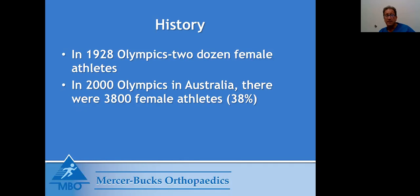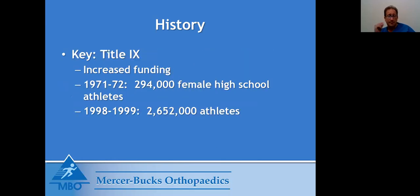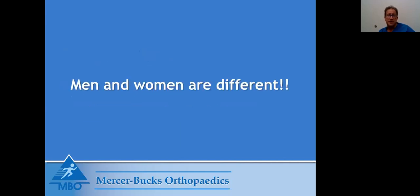We're going to concentrate mostly on back and leg pain, but there are lots of problems — upper extremity, lower extremity, and a bunch of different other issues, including the female triad. Just a little history: in 1928, only two dozen female athletes were in the Olympics. As of 2000, that went up to 3,800, or 38% of all athletes. A lot of this was fueled by Title IX, passed in the 70s, which opened up equal athletics for high school and college. As of 2000, there were over 2.6 million female athletes. The key is that men and women are totally different, and we'll talk about some of those differences specific to each injury.